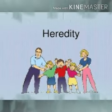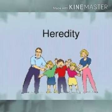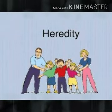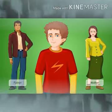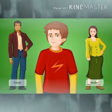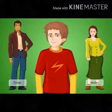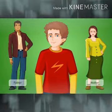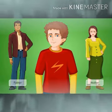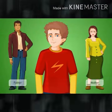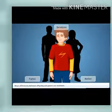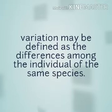Offspring are never an exact copy of parents. As you have seen in this case, there may be some differences. Curly hair and blue eyes of the boy are differences that are called variation.